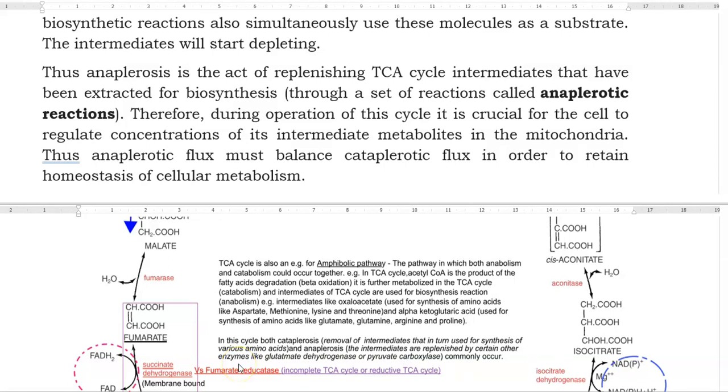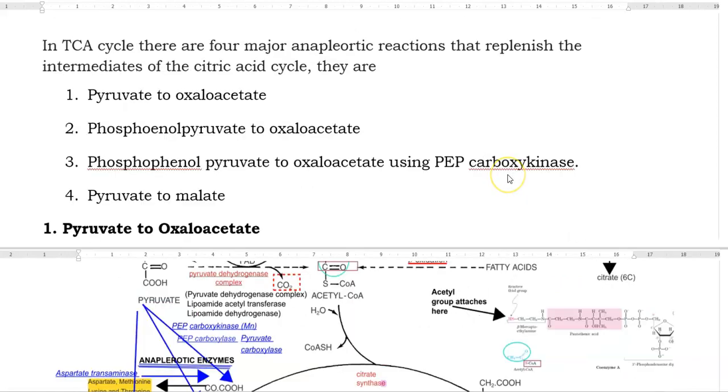Therefore, during operation of the TCA cycle, it is crucial for the cell to regulate the concentration of its intermediate metabolites in the mitochondria. In a cell, an anaplerotic flux must always balance the cataplerotic flux in order to maintain homeostasis during the process of cellular respiration. In TCA cycle, there are four major anaplerotic reactions that replenish the intermediates of the citric acid cycle or TCA cycle.